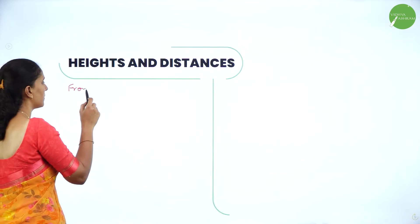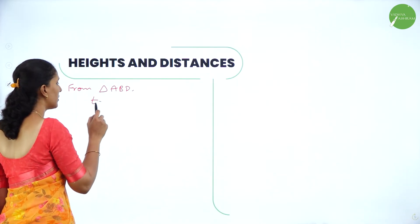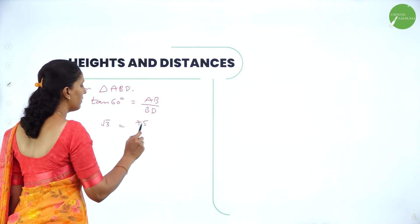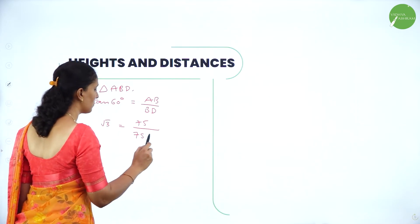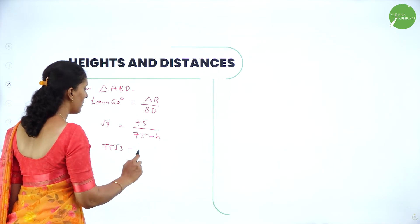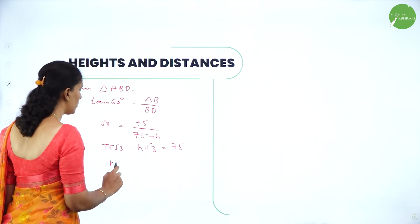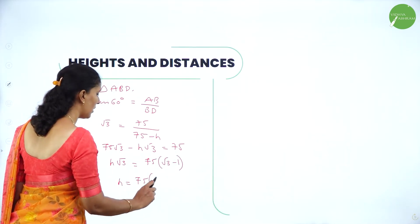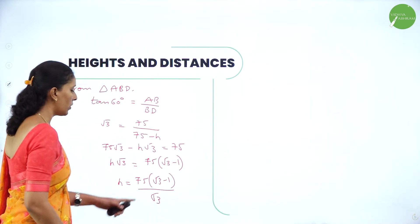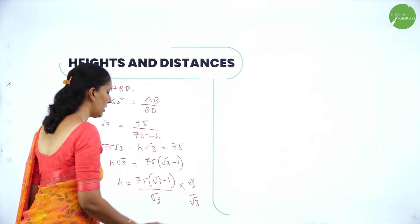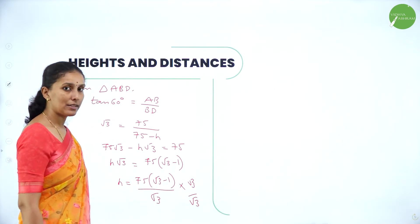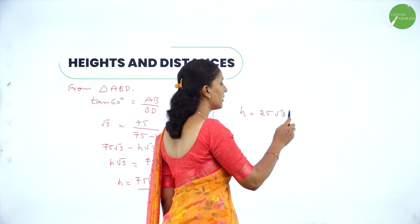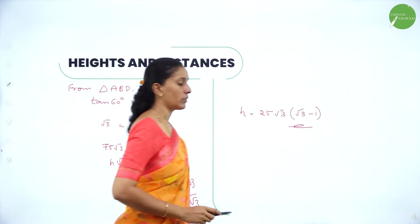From triangle ABD, tan 60° = AB / BD. AB is 75 and BD is 75 − H. So √3·(75 − H) = 75, giving 75√3 − H√3 = 75. Therefore H·√3 = 75(√3 − 1), so H = 75(√3 − 1) / √3. Multiplying by √3/√3, we get √3·√3 = 3, and 75/3 = 25. So the height of the pole is 25·(√3 − 1) / √3, which equals 25(√3 − 1) meters.